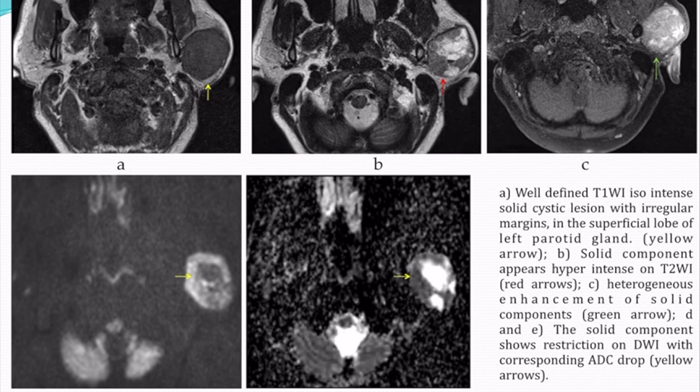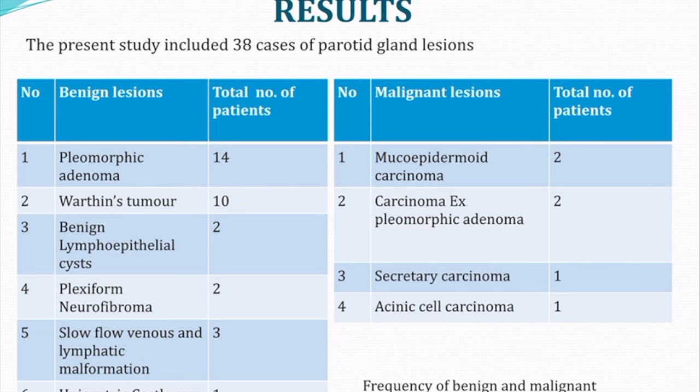A well-defined T1 iso-intense solid-cystic lesion with irregular margins in the superficial lobe of the left parotid gland showed a solid component hypo-intense on T2-weighted images with heterogeneous post-contrast enhancement and no true diffusion restriction. The diagnosis given was acinic cell carcinoma, which was confirmed on histopathological examination.